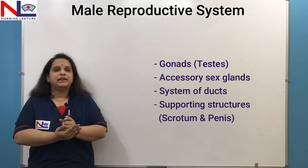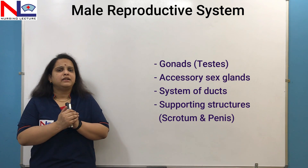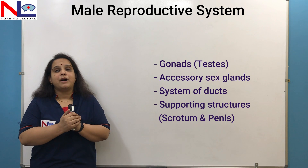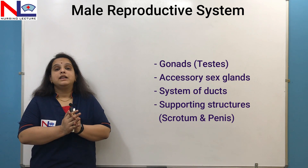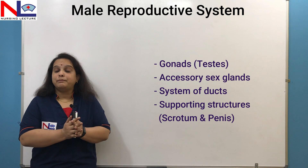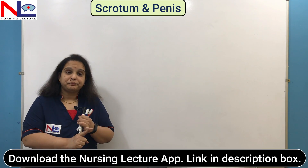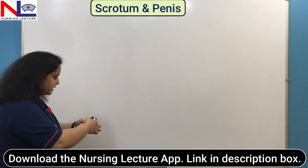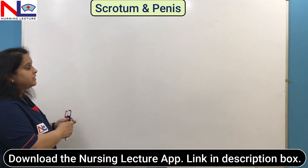The system has many organs, but here I'm giving a brief description about its supportive structures. The supportive structures in the male reproductive system include the scrotum and the penis. Let's have a look at the scrotum first.